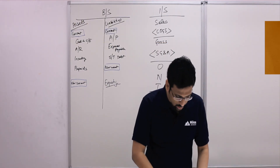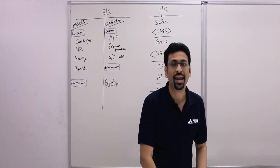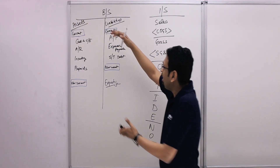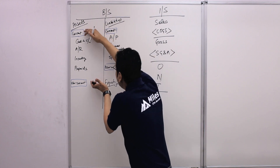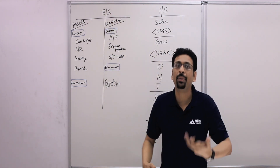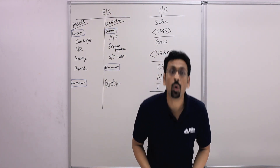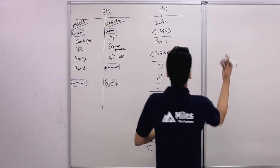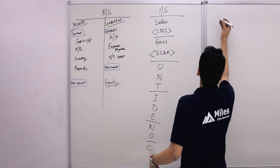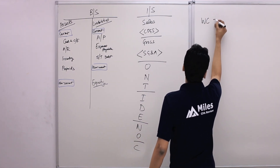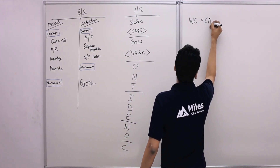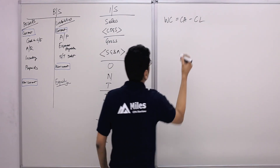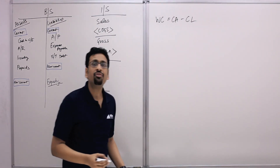Let's start talking about current assets and liabilities. Current assets less current liabilities gives you your working capital. Working capital is equal to current assets minus current liabilities.